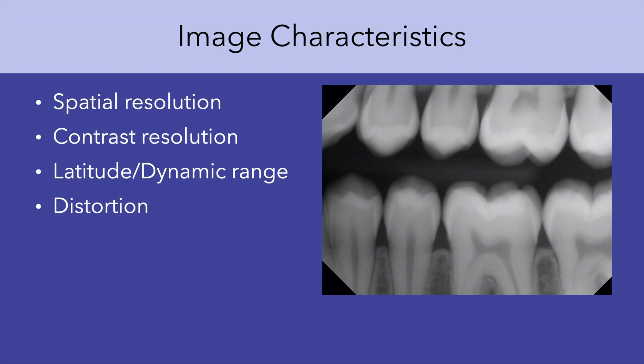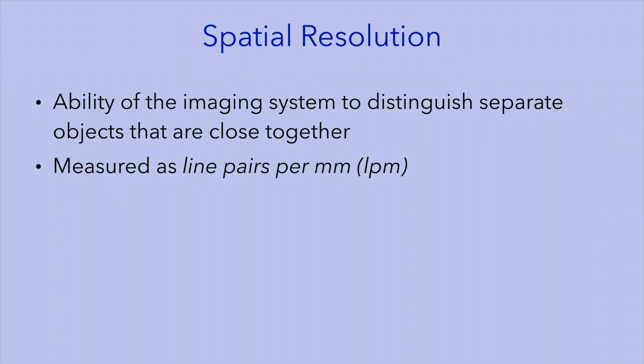A radiographic image can be described in terms of its spatial resolution, contrast resolution, latitude or dynamic range, and degree of distortion. Distortion will be a topic of a subsequent lecture. So let's start with spatial resolution. This is a measure that tells you how well your imaging system can distinguish objects that are closely spaced. Spatial resolution is typically measured as line pairs per millimeter.